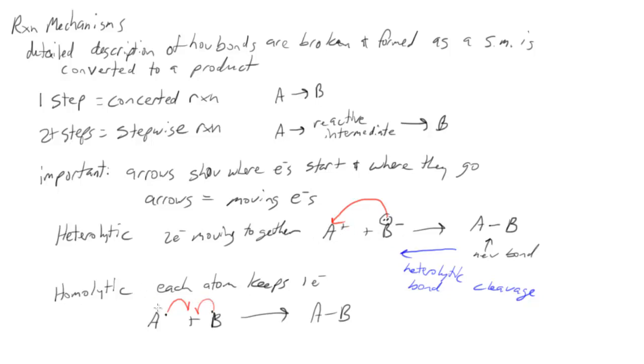You can also have homolytic bond cleavage, in which case if we did reverse of this reaction, as it breaks, B would get one electron, A would get one electron. We form radicals. These compounds with a single unpaired electron are called radicals.